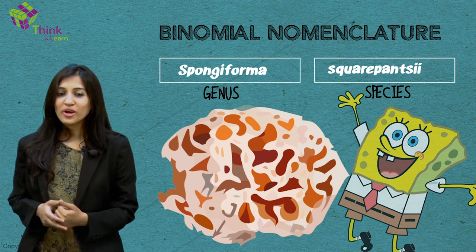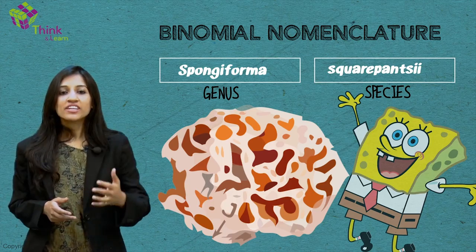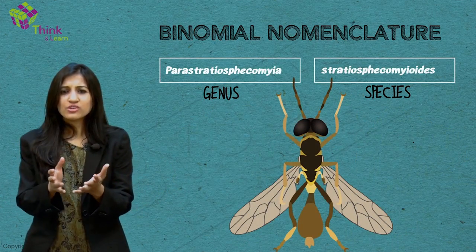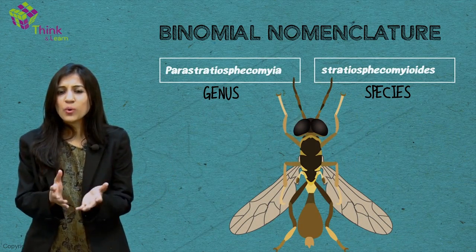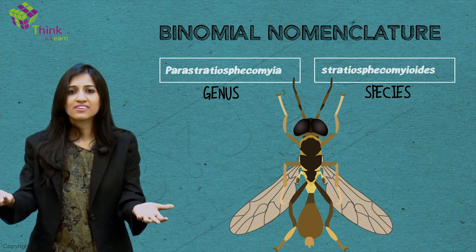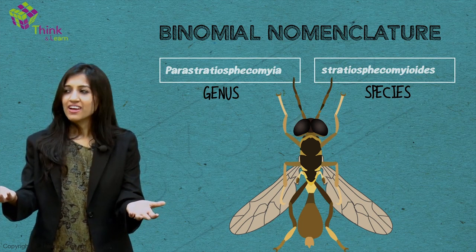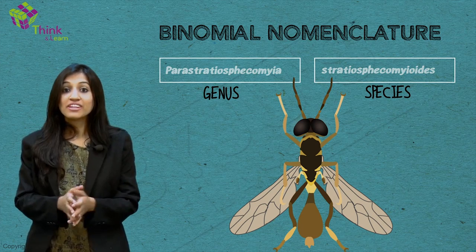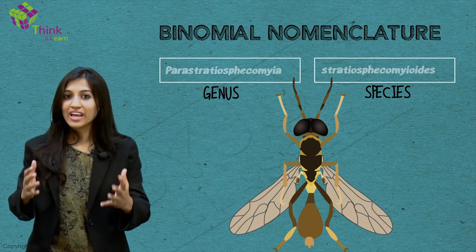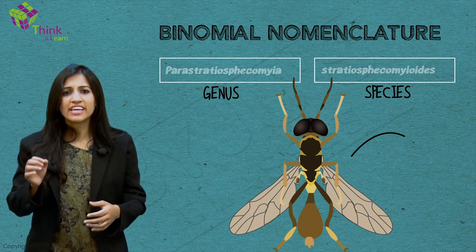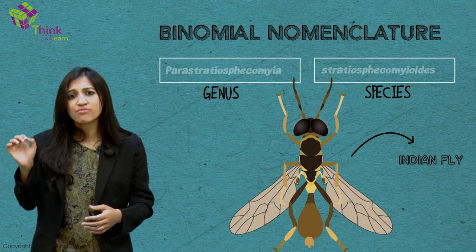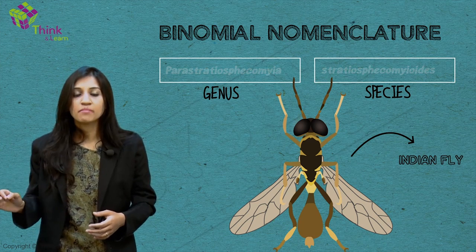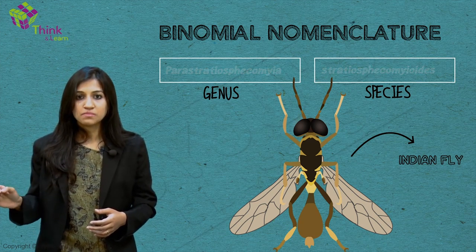And I'll give you one more delightful one: Parastratiosphecomyia stratiosphecomyioides, which doesn't really seem to mean anything. But it's significant because, at 42 characters, this small Indian fly has the longest name of any species.